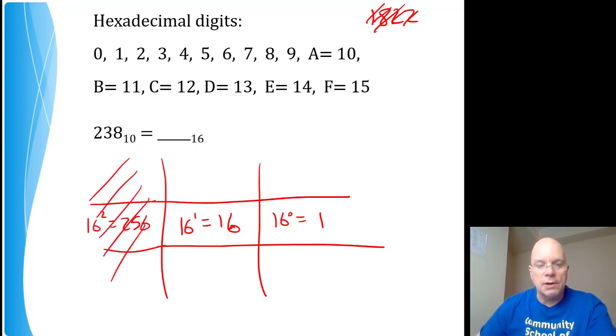We don't need any 256s if we're trying to represent 238, however, but we do need some 16s. 15 sixteens is 240, which is really close to 238, so I must need one less than that. I must need 14 sixteens, which is 160 and 64, that's 224.